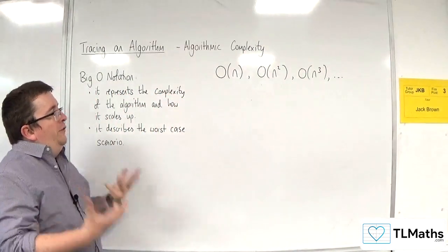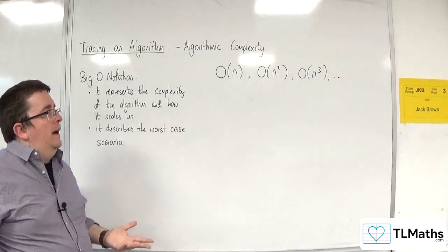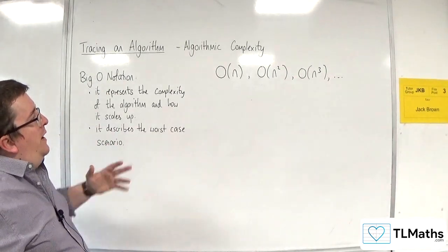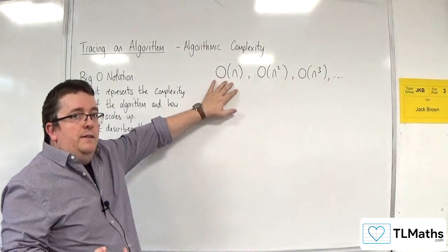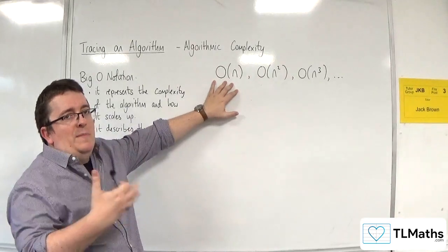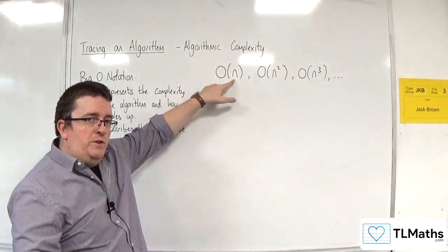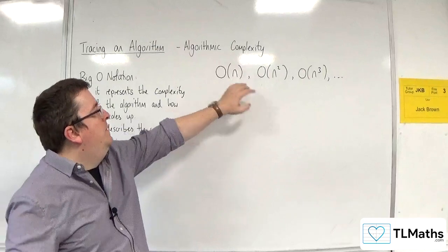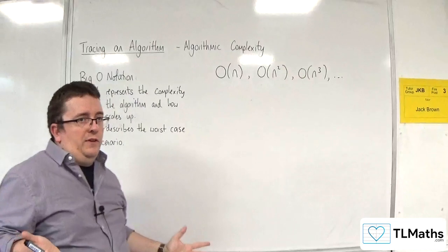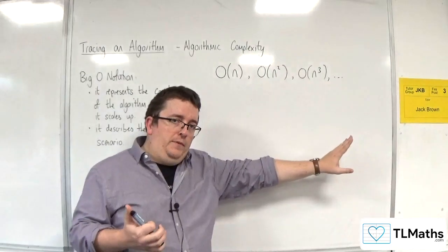Now, what does that represent? It kind of looks like function notation, but it's not really. So really what it means is that here we would refer to that as linear complexity, because it's like having mx plus c, isn't it? But you've just got the single n. It's not n squared. It's not n cubed in there. So refer to that as linear complexity. This would be quadratic complexity, for obvious reasons. And this would be cubic complexity. And the further you go on, the worse it gets.